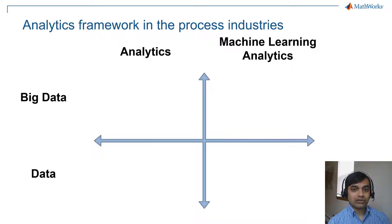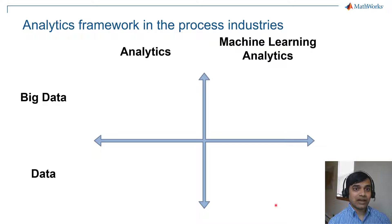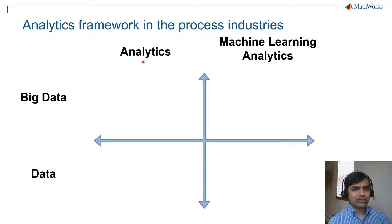So what does advanced data analytics exactly mean in this industry? This 2x2 matrix helps summarize my view of data analytics in this space. Analysis in the first column refers to conventional analysis tools — things that the industry has been doing for quite some time. Even if they don't put it into practice, they are certainly aware of it to a greater extent than machine learning analytics.